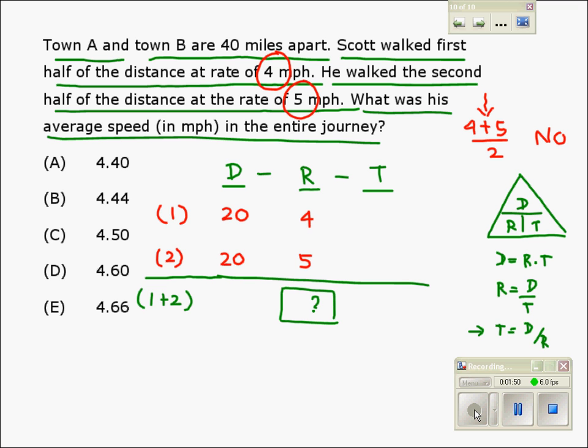Therefore, time in Part 1 becomes 20 over 4, which is 5. And in Part 2, it becomes 20 over 5, which is 4.